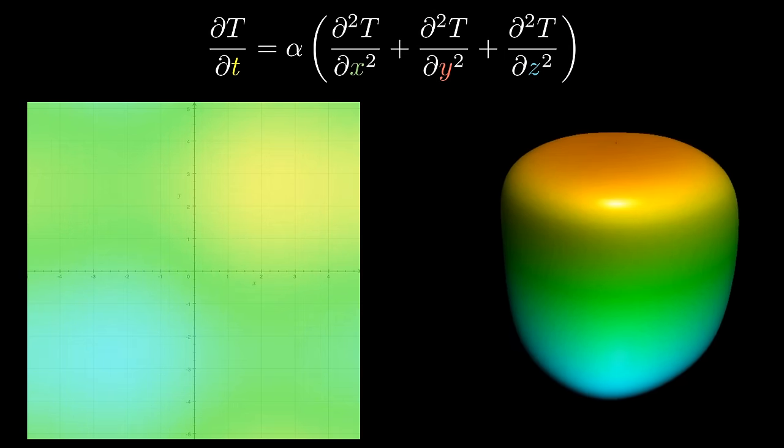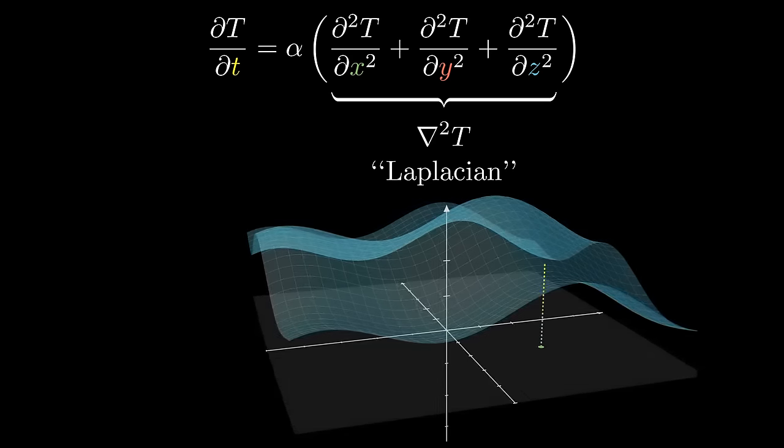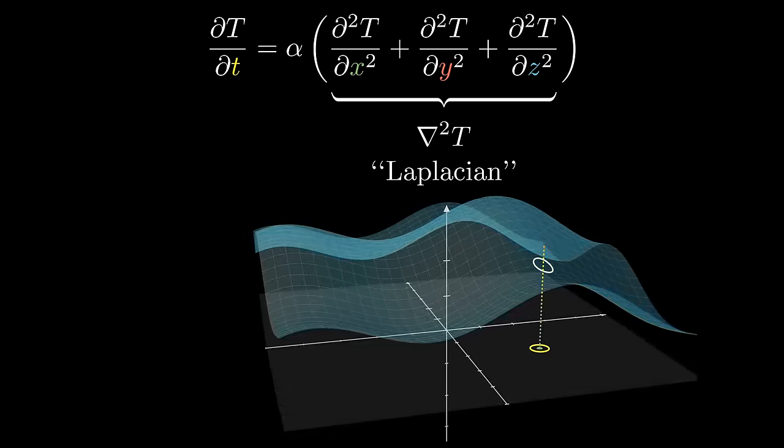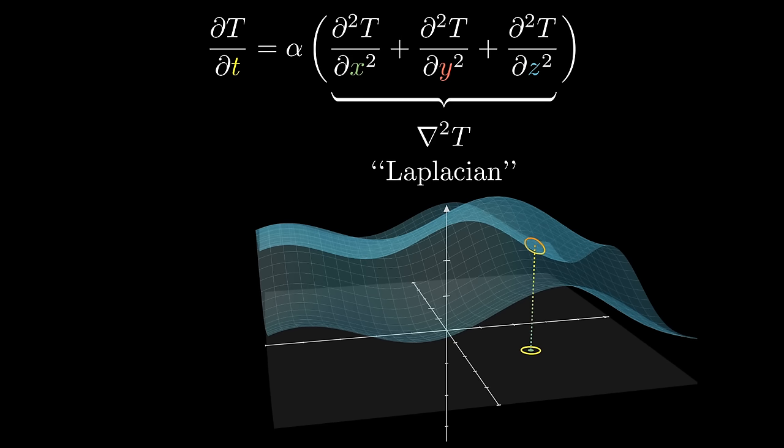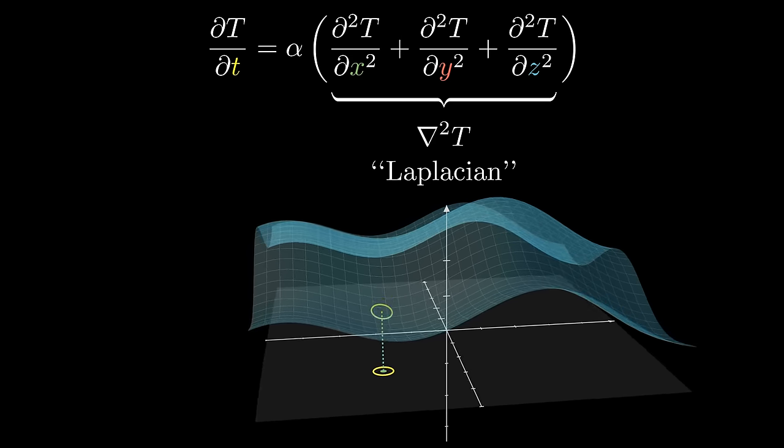And adding up all of these second spatial derivatives like this is common enough as an operation that it has its own special name, the Laplacian, often written as this upside down triangle squared. It's essentially a multivariable version of the second derivative, and the intuition for this equation is no different from the one-dimensional case. This Laplacian can still be thought of as measuring how different is a point from the average of its neighbors.